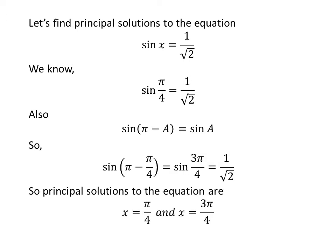So the principal solutions to the equation sine of x is equal to 1 upon square root of 2 are pi upon 4 and 3 times pi upon 4.